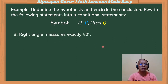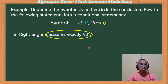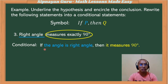Let's have another example: 'A right angle measures exactly 90 degrees.' Our subject, 'right angle,' will be our hypothesis. Our predicate, 'measures exactly 90 degrees,' represents the conclusion. In our conditional statement, we insert terms to make it grammatically correct: 'If the angle is a right angle, then it measures 90 degrees.'